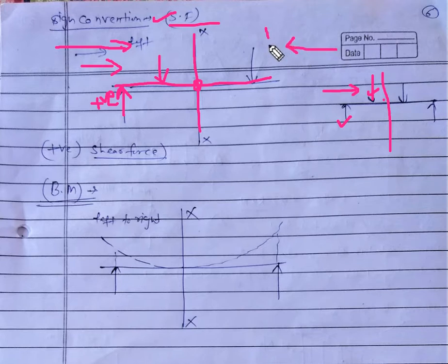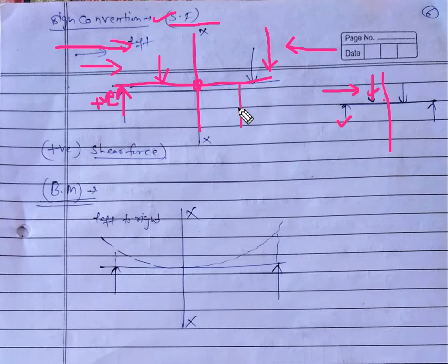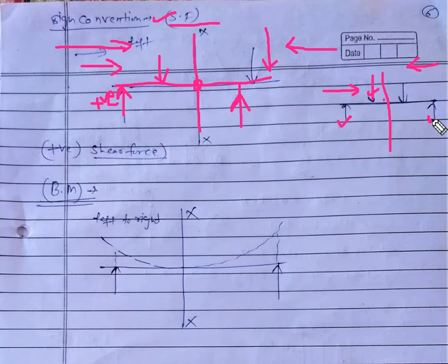If we change the direction — approaching from right to left — then all the downward forces are considered as negative and all the upward forces are considered as positive. For example, when approaching from right to left, this force is considered as negative and this force is considered as positive.